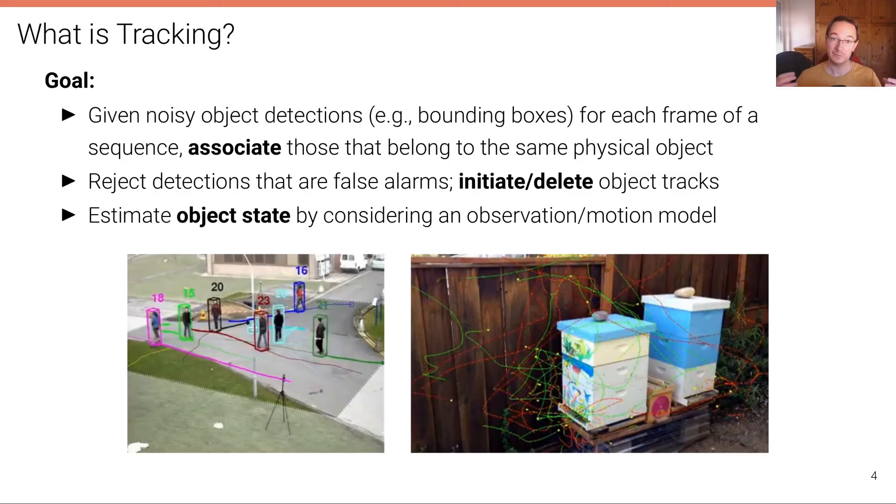And then we have to estimate the object state. The object detection is just a noisy observation, but we are interested in the true object state. So how can we estimate that object state more precisely by considering, for example, an observation or a motion model and integrating this prior knowledge into the estimation process using, for example, a so-called base filter. Now here at the bottom, I have two example videos of object tracking results.